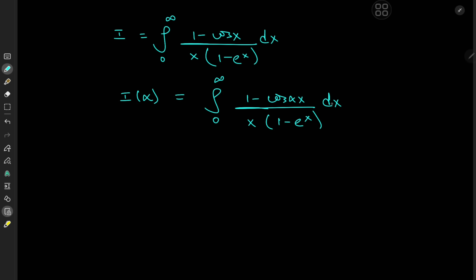We immediately notice that I(0) is going to be 0, since in the numerator we have 1 minus cosine(0) which is 1, so that collapses to 0. That will come in handy later, since applying Feynman's trick is essentially just converting the integral problem into an initial value problem.